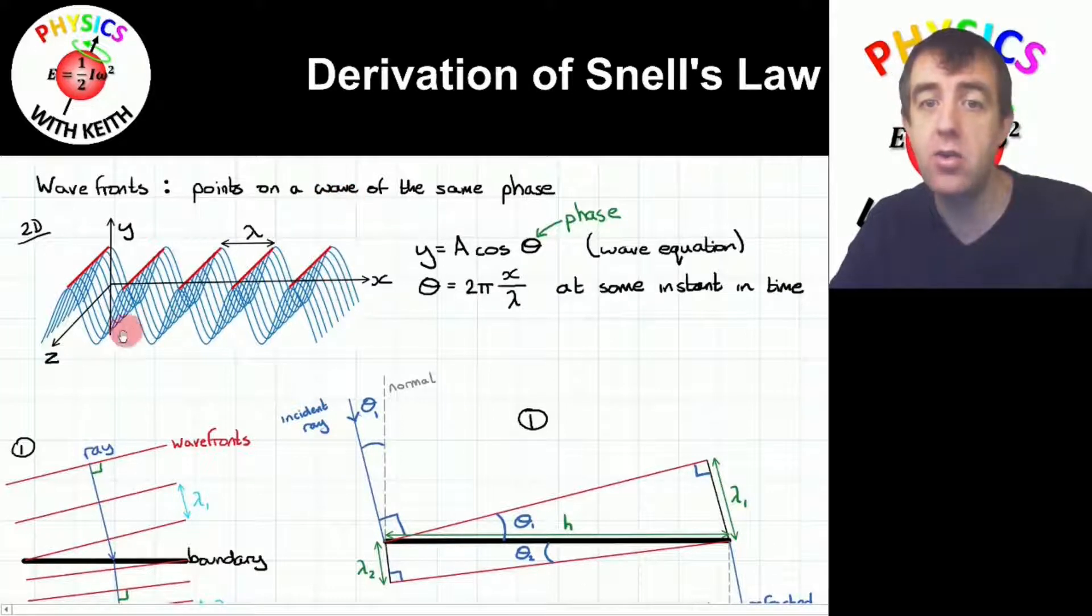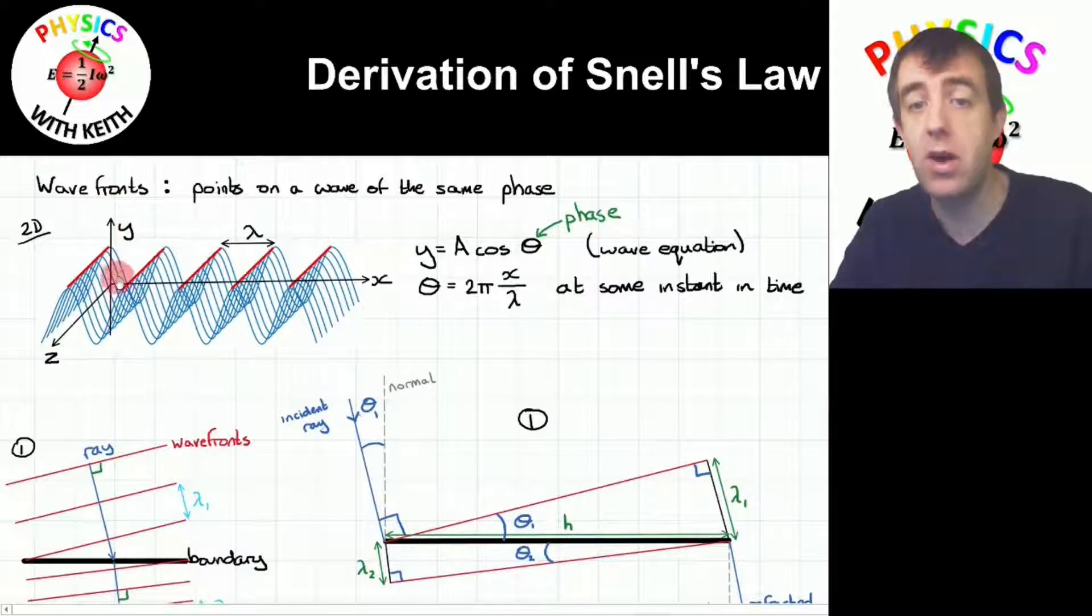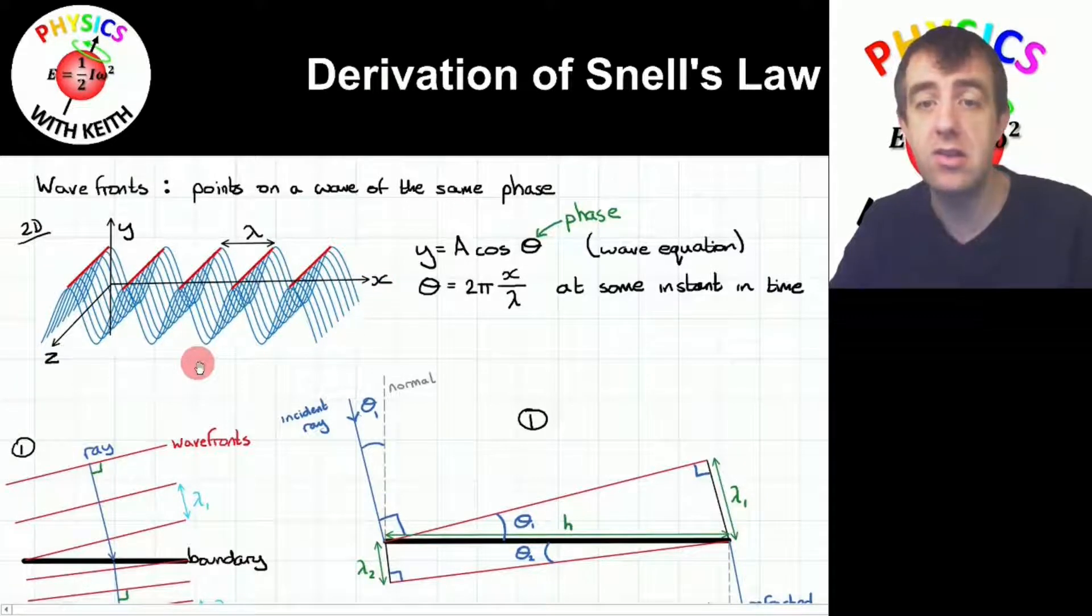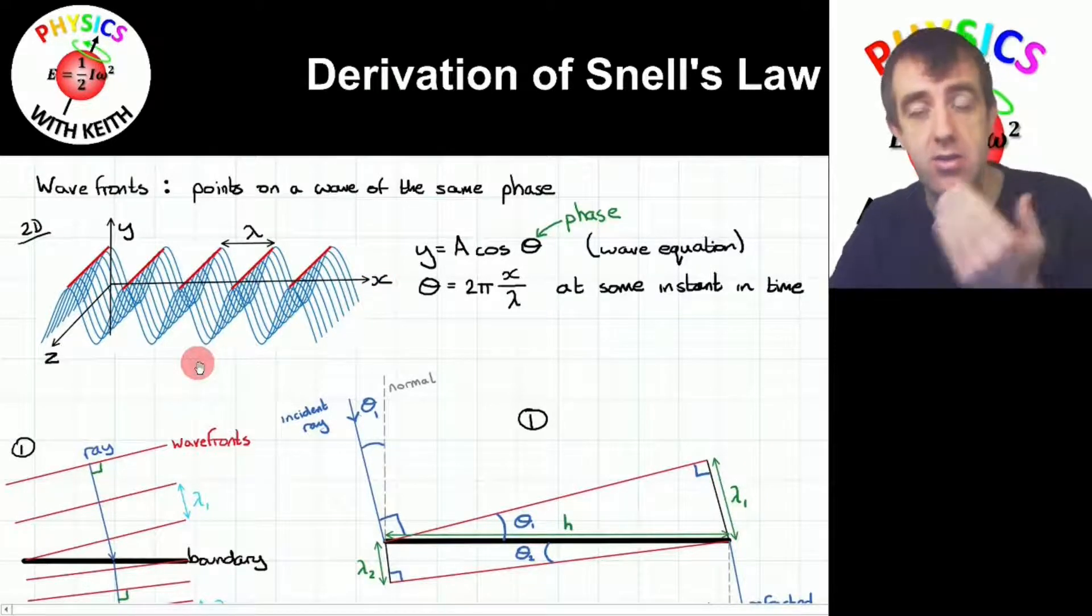So here I'm looking at a two-dimensional wave, and I draw a dot wherever I have the same phase, and I form these lines. In this graph, the displacement is in the y-axis, and we are looking at an instant in time, so we can see the variation of displacement as a function of the x-axis. The z-axis is this second spatial axis, giving us our two-dimension.